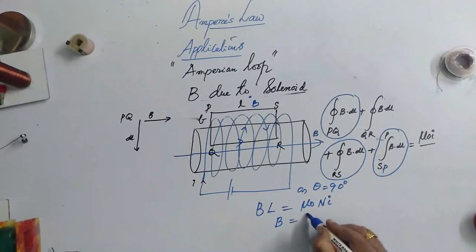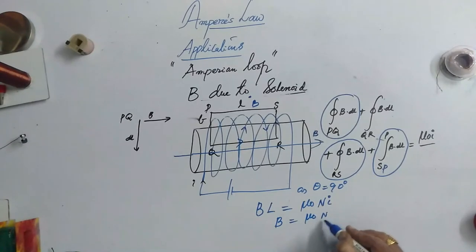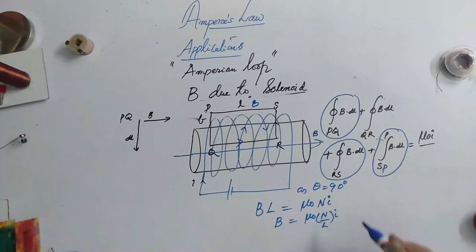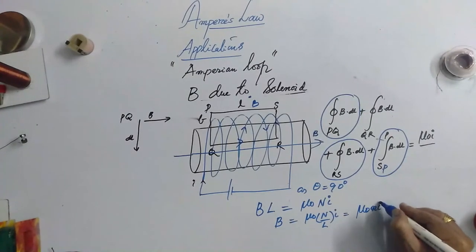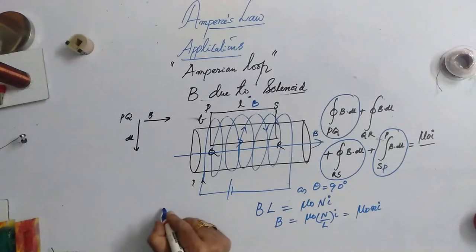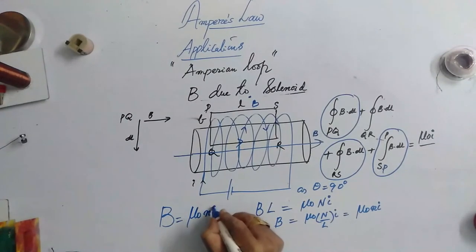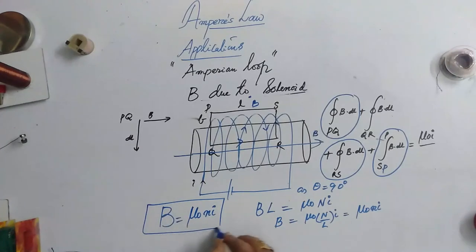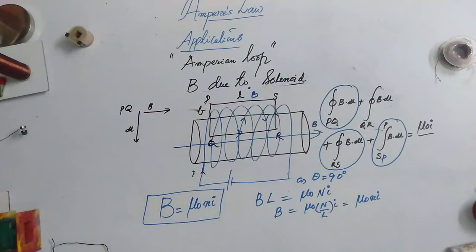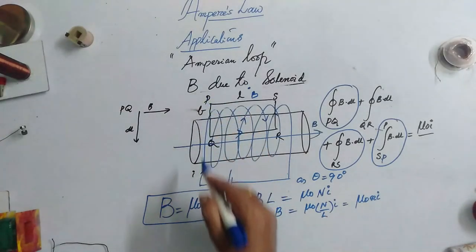The value of magnetic field inside the solenoid is equal to mu 0 N by L times of I. If you represent the number of turns per unit length as small n, then we get mu 0 nI. So, finally, the answer is B inside the solenoid mu 0 times of nI where I is the current passing through it and then n is the number of turns per unit length. Outside the solenoid, the magnetic field is 0 and here perpendicular direction also the magnetic field is 0.